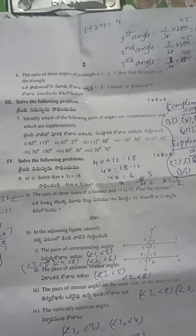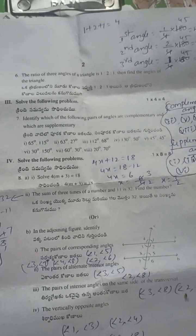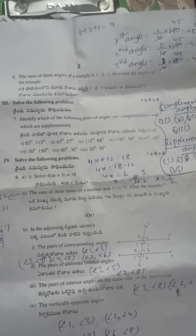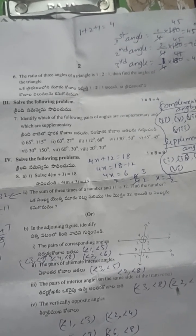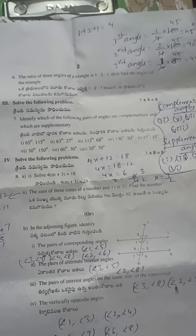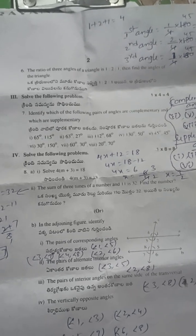Next, the ratio of three angles of a triangle is 1:2:1. Find the angles of the triangle. First angle is 1/4 into 180, that is 45. Second angle is 90 degrees. Third angle is 45 degrees.